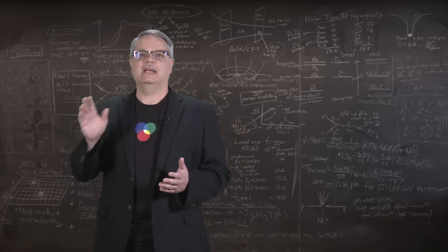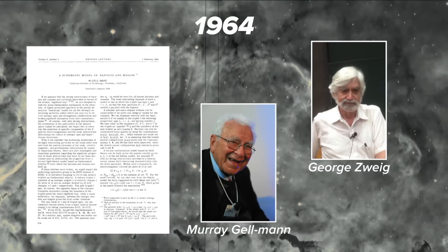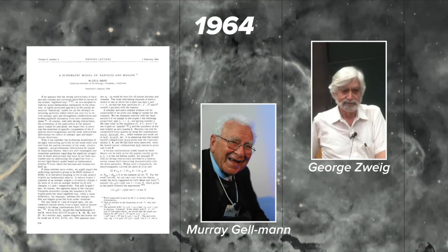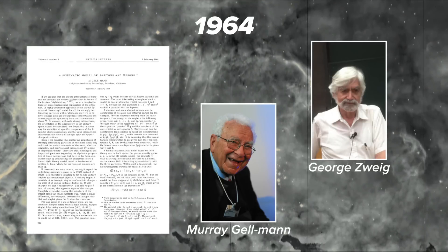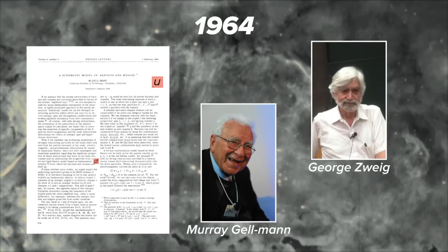It all started back in 1964 when Murray-Gell-Mann and George Zweig independently proposed what we now call quark theory. We know a lot more about quarks than they did back then, but they proposed that there were three types of quarks with the names up, down, and strange.